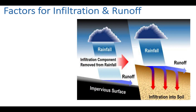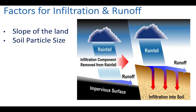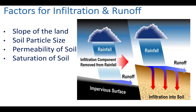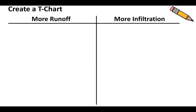There are different factors that can influence whether water is going to infiltrate or become surface runoff. The first is the slope of the land. The second is the size of the soil particles. The next is the permeability of the soil. Then the saturation of your soil, and finally whether your ground is made up of vegetation. Throughout this lesson you'll be making a T-chart in your notes to record the factors that lead to either more runoff or more infiltration.